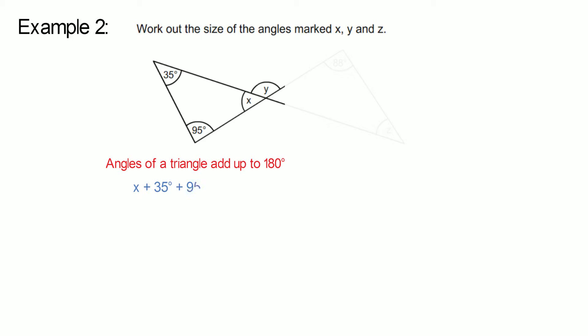Example two, in this diagram, work out the size of the angles marked X, Y and Z. We will firstly work with this triangle on the left. We know that the angles of a triangle add up to 180 degrees. Therefore, X plus 35 degrees plus 95 degrees equals 180 degrees. This simplifies to X plus 130 degrees equals 180 degrees. X equals 50 degrees.